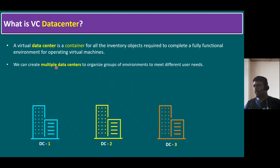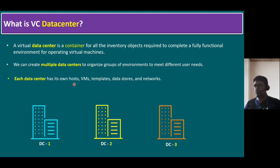We can create multiple data centers to organize groups of environments to meet different user needs. For example, in our organization we might have multiple locations — data center one, data center two, data center three. It depends on the customer environment: some customers have only two data centers (DC one and DC two), while some have more than five. We can create DC1, DC2, DC3, DC4, DC5 within our vCenter. Each data center has its own ESXi hosts, virtual machines, templates, datastores, and networks. It is a logical container.